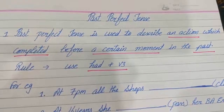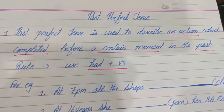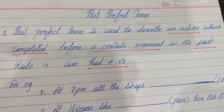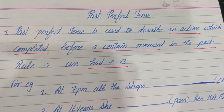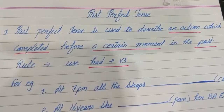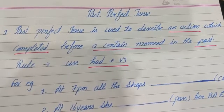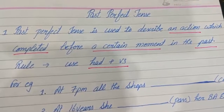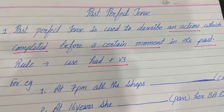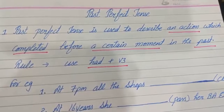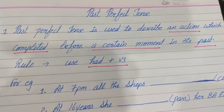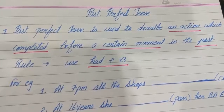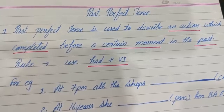Good morning students. I hope you all would be doing great. In today's video we will cover the next concept of past tense, i.e. past perfect tense. Past perfect tense is used to describe an action which completed before a certain moment in the past. That action took place in the past and completed in the past, so for that action we will be using past perfect tense.